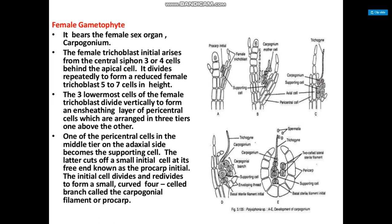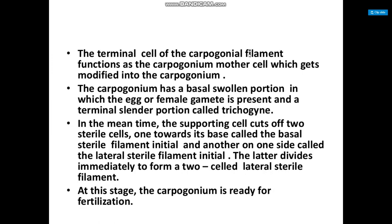One of the pericentral cells in the middle tier on the adaxial side becomes the supporting cell. The lateral cut-off initial cell is free and known as the carpogonial initial. The initial cell divides and re-divides to form a small curved four-cell branch called the carpogonial filament, also known as the procarp.